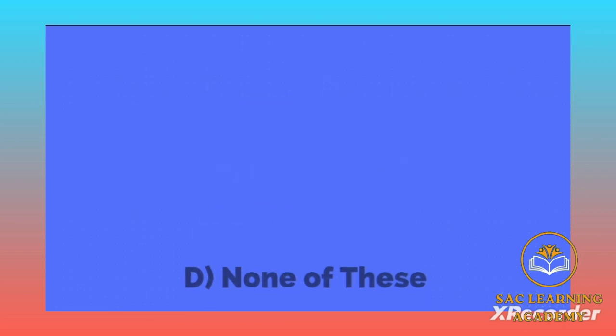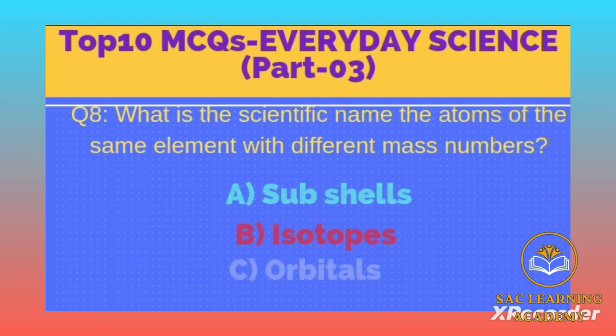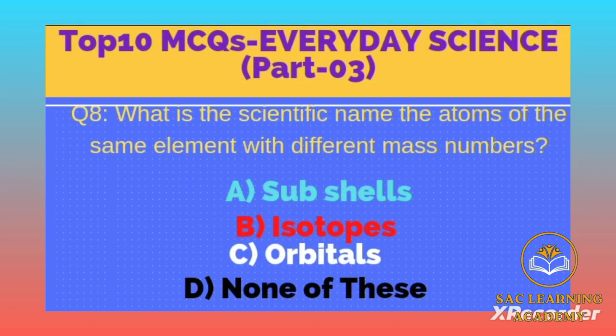Question number 8: What is the scientific name of the atoms of the same element with different mass numbers? Option A: subshells, B: isotopes, C: orbitals, D: none of these. Correct option is B, isotopes.